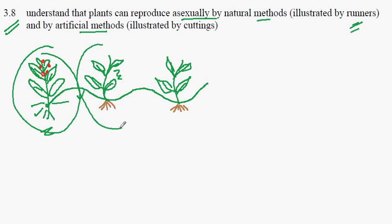This plant and this plant are genetically identical, so that means this is a clone. When these connections break down, we have one, two, three cloned plants.